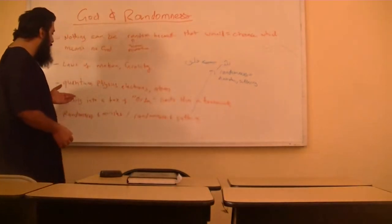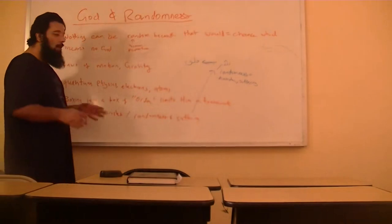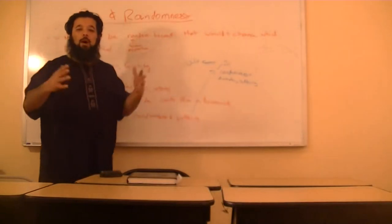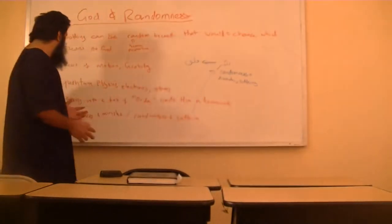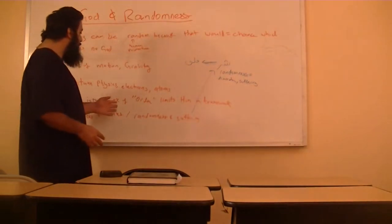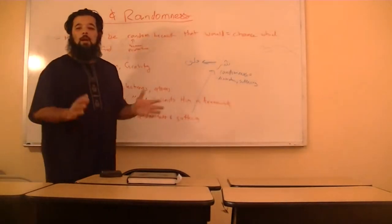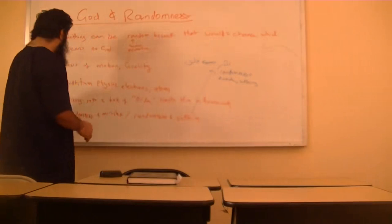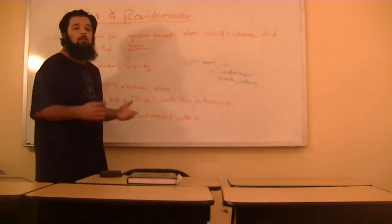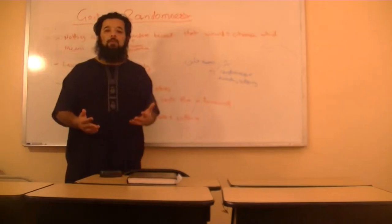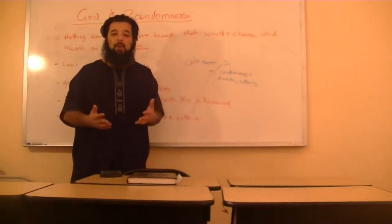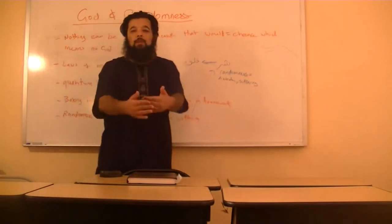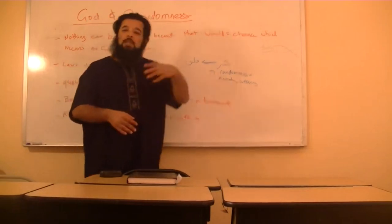One is, we cannot box God in, we cannot put God in a box of orderliness. God is beyond these boxes. So boxing into a box of order limits Him, meaning God, in His framework, in how He does things. And so on the one side, randomness means something miraculous, and I'll give you an example. Things in nature happen randomly. That's just the way it is. From Allah's perspective it's not random because He knows what's going to happen. But from a human perspective, when a human is observing it, it's random.